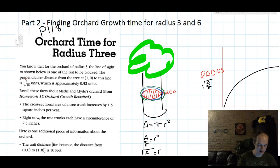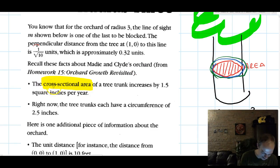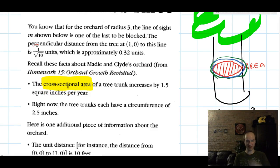So for the orchard of radius 3, the book gives us a nice page where it summarizes a lot of the information. Let's talk for just a moment before we get into too much calculation about this cross-sectional area thing, because I've been seeing that phrase, that term, messing people up.